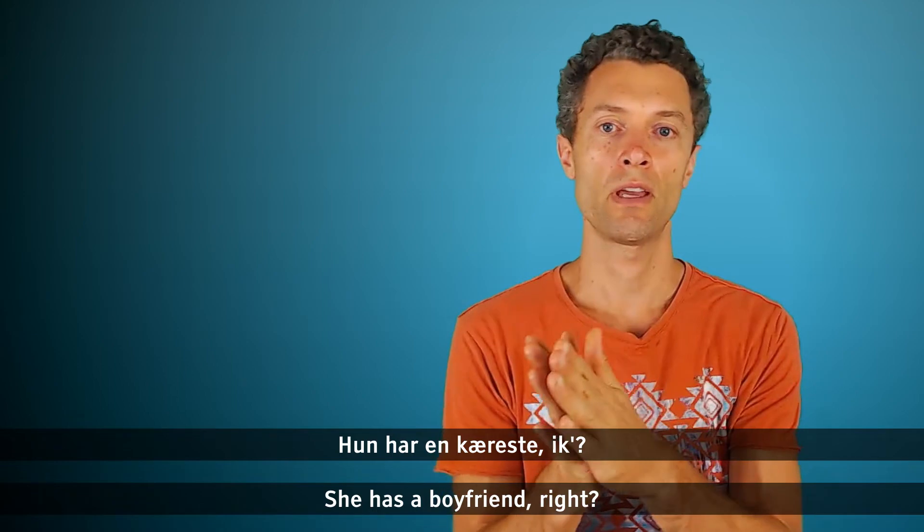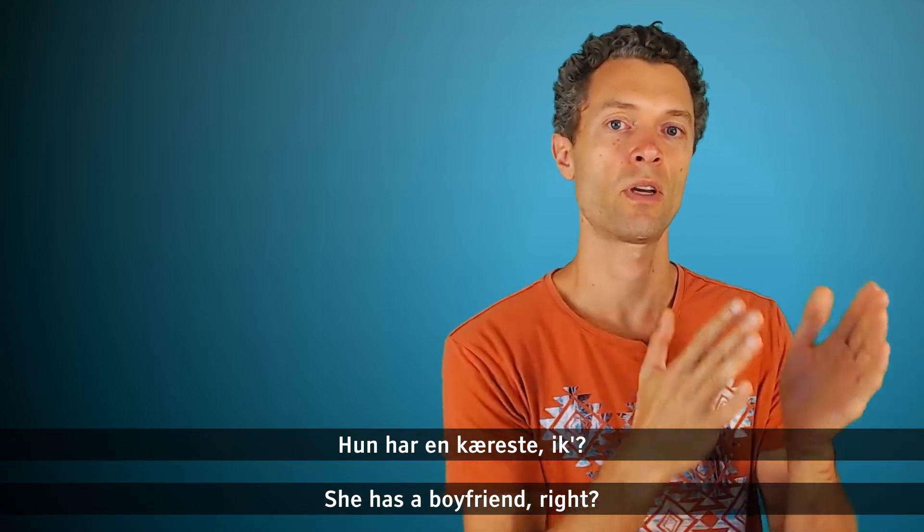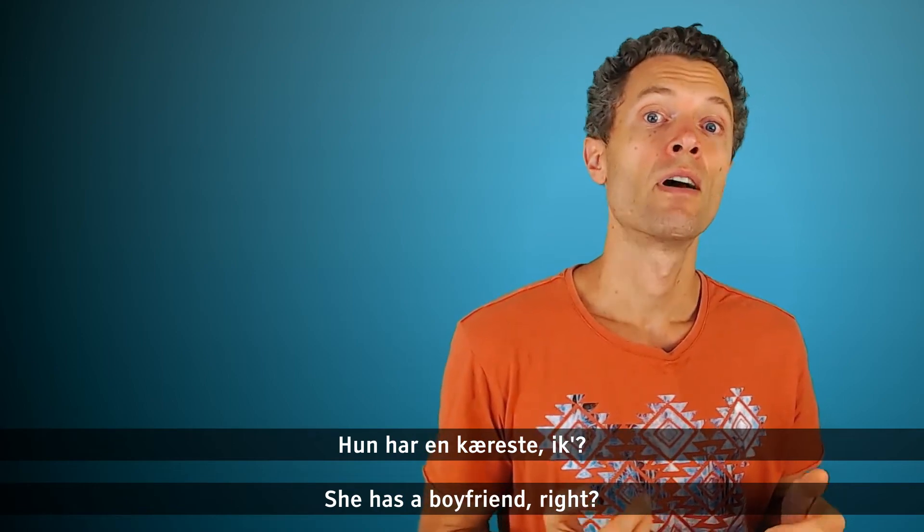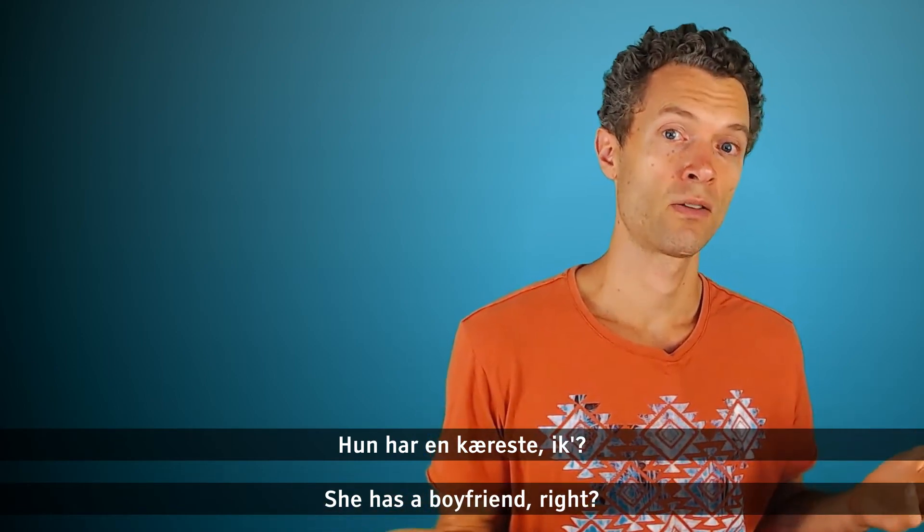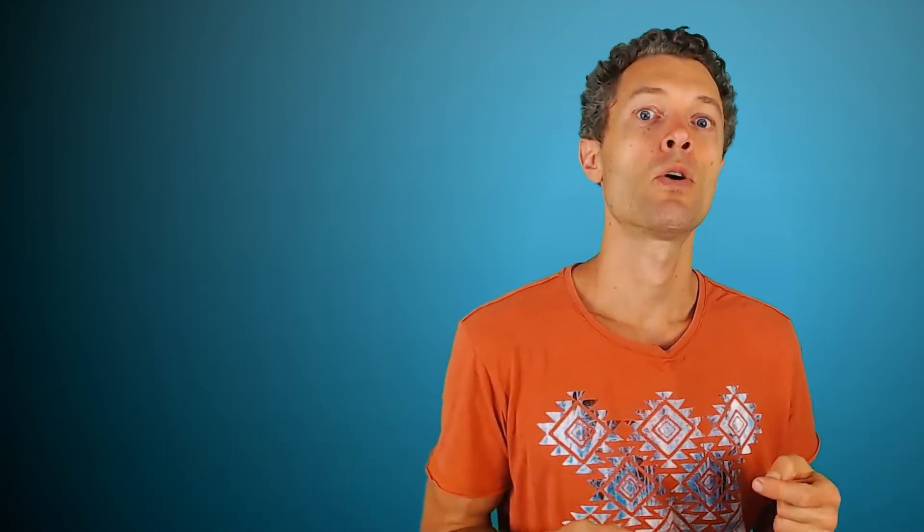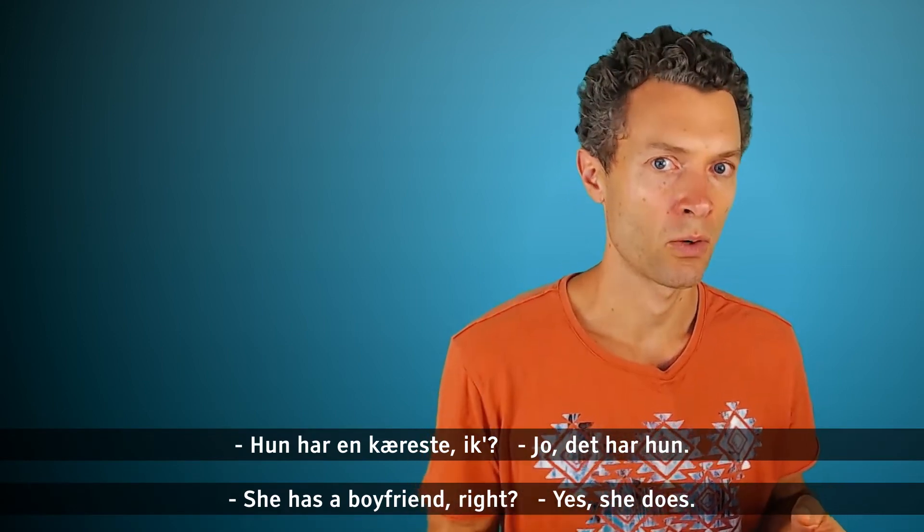So here again we have the ik in the end. We have hun first, the subject first, then the verb. Hun har en kæreste ik. And then we have the answer, yes, she does. What word do we use here? Ja or jo? We use jo. Jo, det har hun. Hun har en kæreste ik? Jo, det har hun.